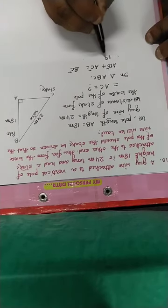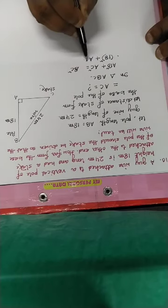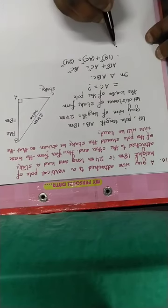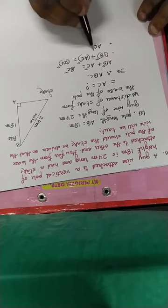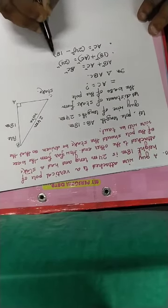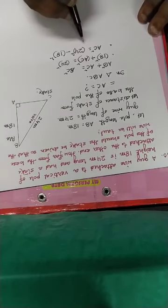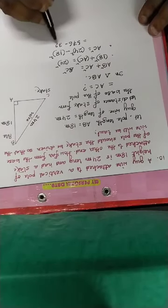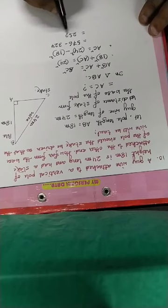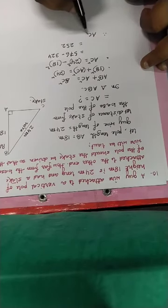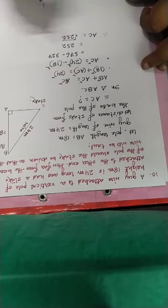18 square plus AC square is equal to 24 square. AC square is equal to 24 square minus 18 square. 24 square is 576 and 18 square is 324. 576 minus 324 equals 252.